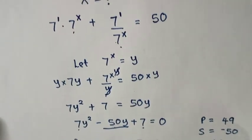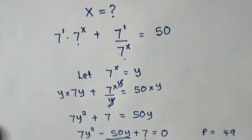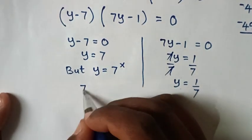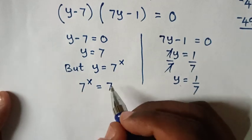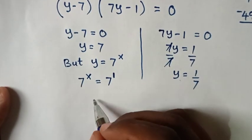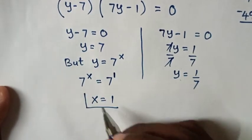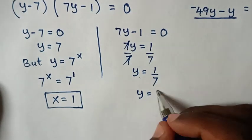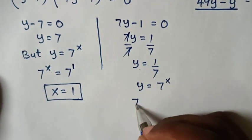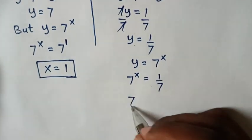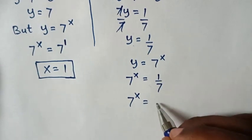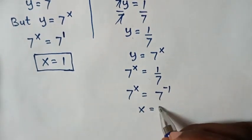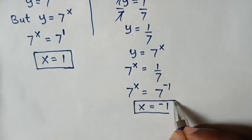Recalling that y = 7^x: for y = 7, we have 7^x = 7 = 7^1, so since the bases are the same, x = 1. For y = 1/7, we have 7^x = 1/7 = 7^(-1), so comparing powers gives x = -1. Therefore the two values of x are 1 and -1.